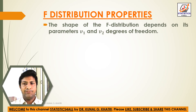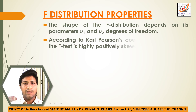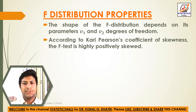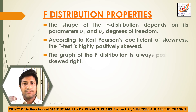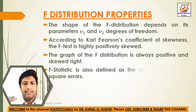Here degrees of freedom V1 is equal to N2 minus 1 and V2 is equal to N1 minus 1. According to Carl Pearson's coefficient of skewness, the F test is highly positive skewed. The graph of F distribution is always positive and skewed right. F statistic is also defined as the ratio of two mean square errors.